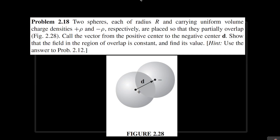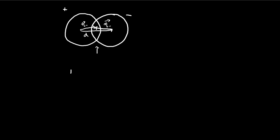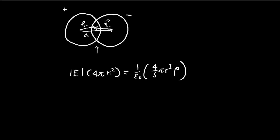They actually tell you to use the result from problem 2.12 — that's exactly what 2.12 does. It tells you what the electric field inside of a sphere is, so I'm just going to derive that result real quick. We use Gauss's law, and this is going to be equal to 1 over epsilon times the amount of charge enclosed: 4/3 pi r cubed times rho. You see the 4 pi's cancel out, these r's cancel out, so you're left with something like this. The electric field is equal to something like this.